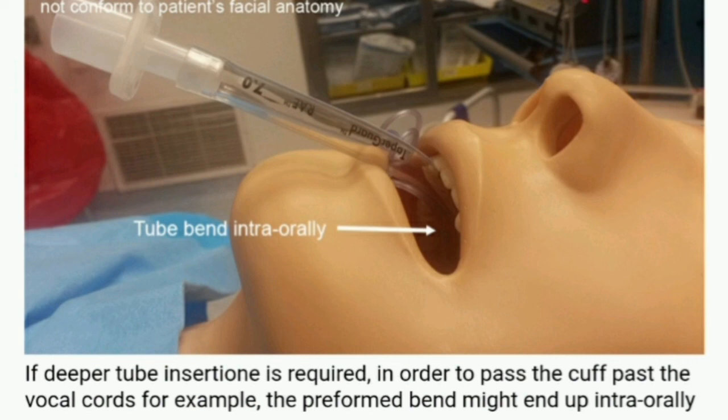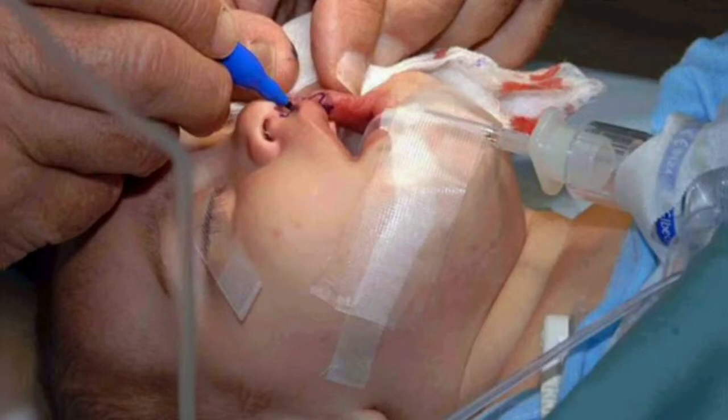The oral RAE tube is best secured by taping it midline to the skin between the lower lip and chin. Use a white tape or a bio-occlusive dressing to get as big a surface area of contact between the tube, the skin, and tape as possible.